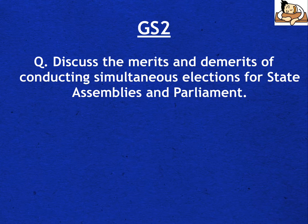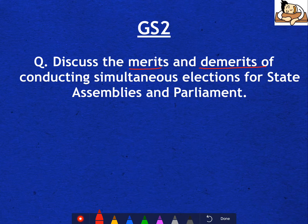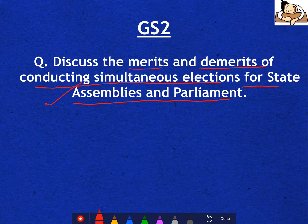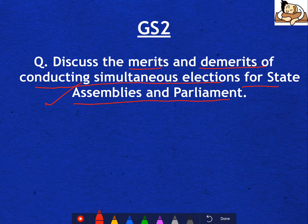Moving forward, the GS2 question is a very conventional question that is important every year for mains. Discuss the merits and demerits of conducting simultaneous elections for state assemblies and parliament. Last year, President Pranab Mukherjee in January 2017 said that simultaneous elections should happen. Some political leader starts the debate every time, so you should be prepared to directly list the merits and demerits from your mind.